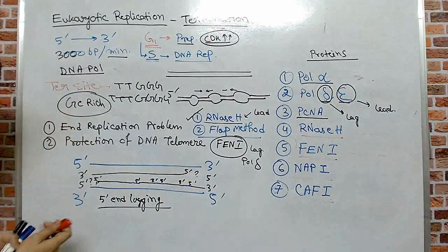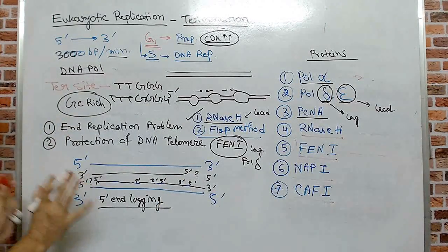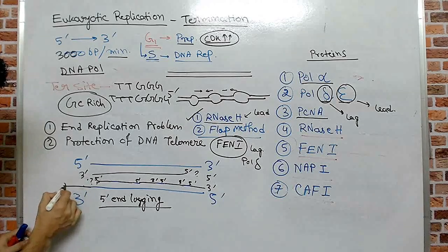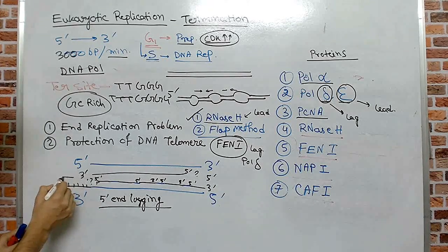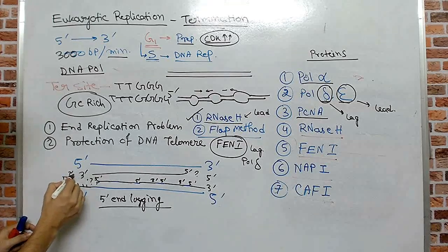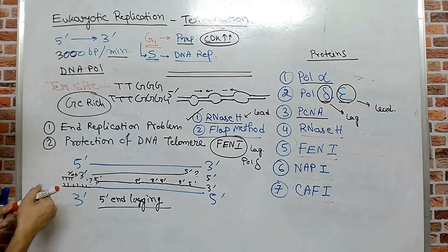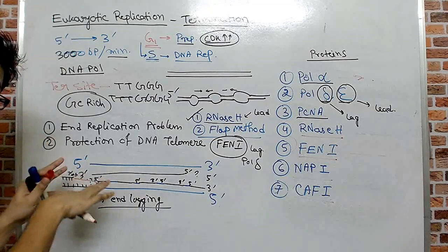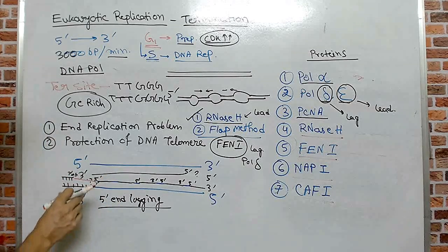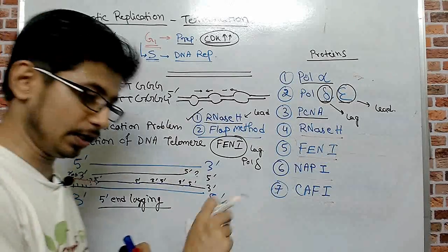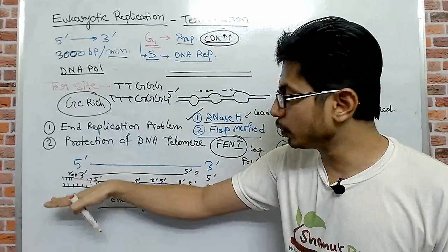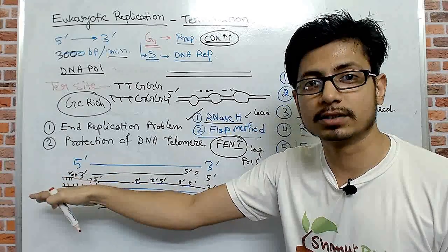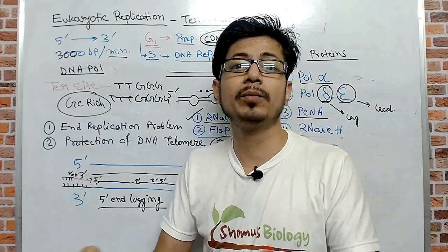The only way to fix the end replication problem is to provide a free 3' hydroxyl somehow. If we extend the template DNA, we can add a primer there, giving a free 3' hydroxyl which can then be extended. This process is done by an enzyme known as telomerase. The idea is to extend the template DNA first, add a primer sequence against it to have a free 3' hydroxyl, and then extend it.